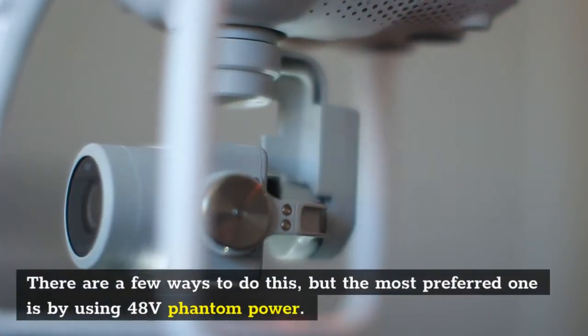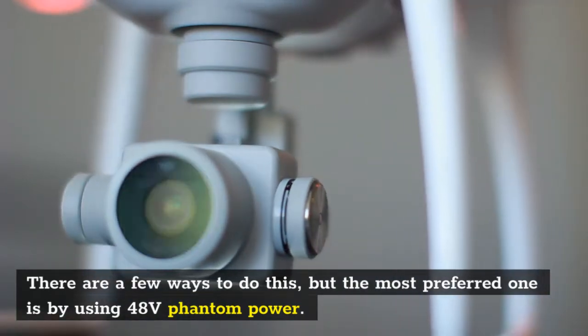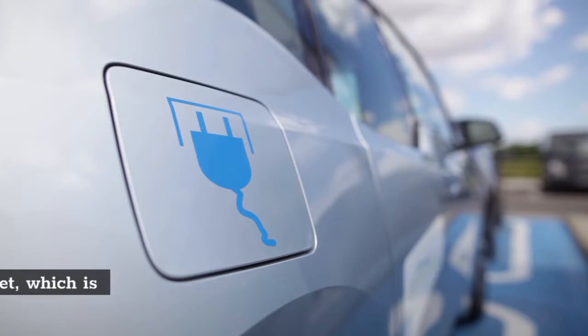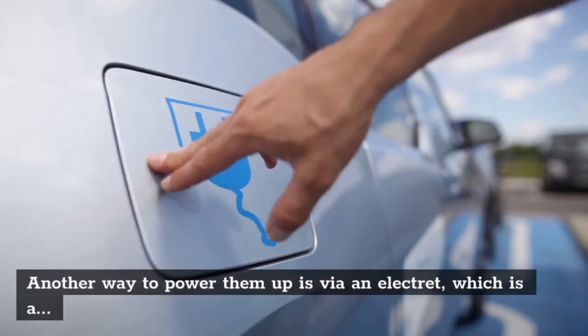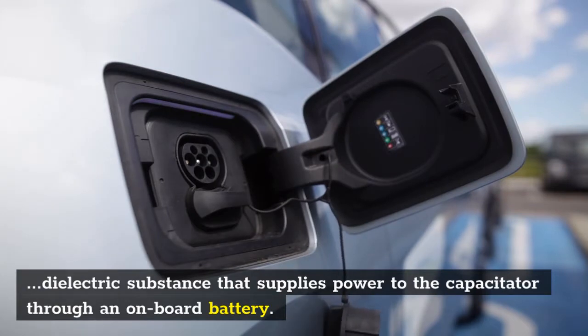There are a few ways to do this, but the most preferred one is by using 48 volts phantom power. They can also be powered through a vacuum tube. Another way to power them up is via an electric, which is a dielectric substance that supplies power to the capacitor through an onboard battery.